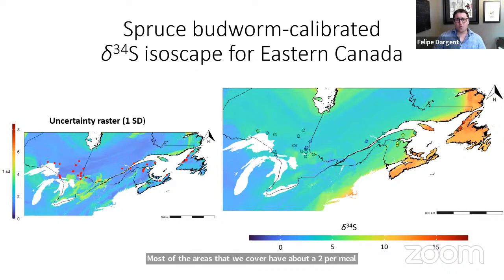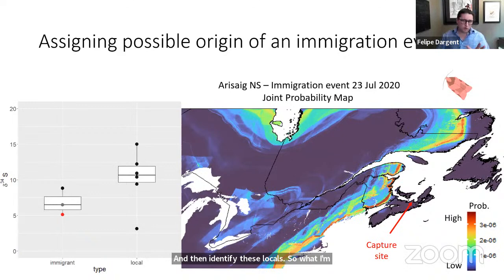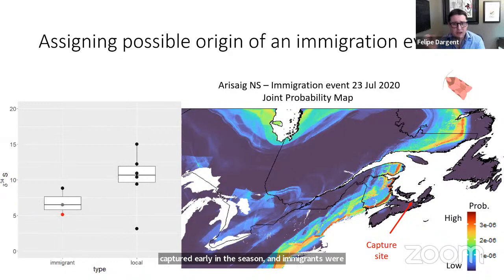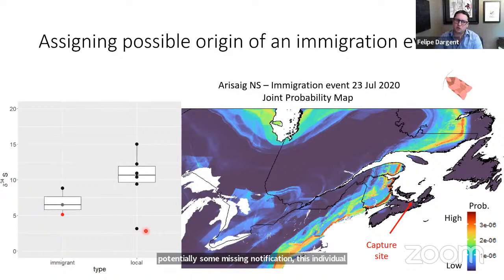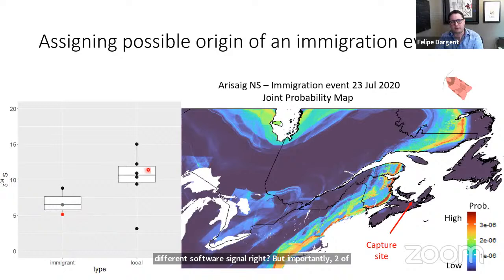Now, how do we apply this to identifying immigrants versus locals? The first site is near the coast in Nova Scotia — called Arisite. Putative locals were captured early in the season, and immigrants were captured after the local populations had died, from an event detected by radar in July 2023. Comparing the sulfur signal of locals versus immigrants, you can see that one individual appears to have been misidentified as local — it has a very different sulfur signal.